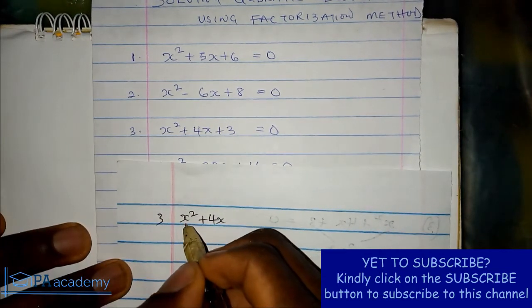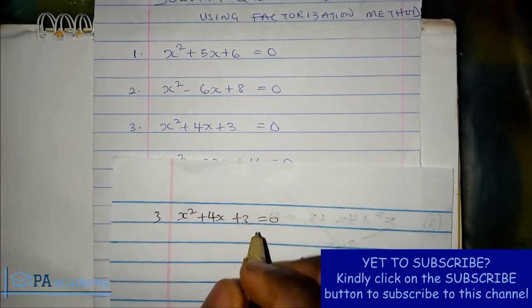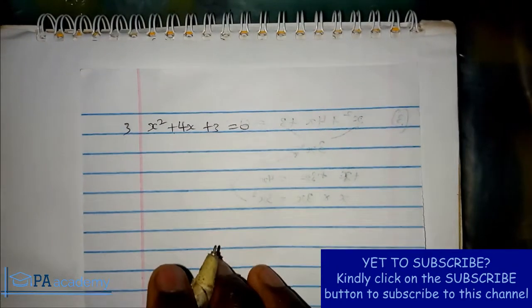So example 3, we have x squared plus 4x plus 3 equals 0. For factorization...